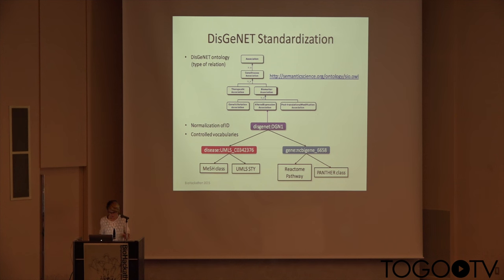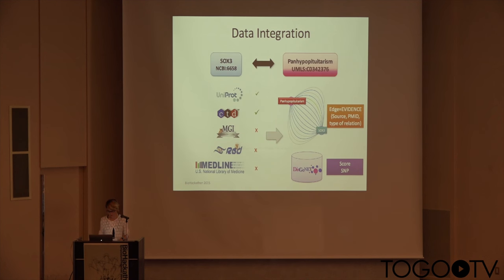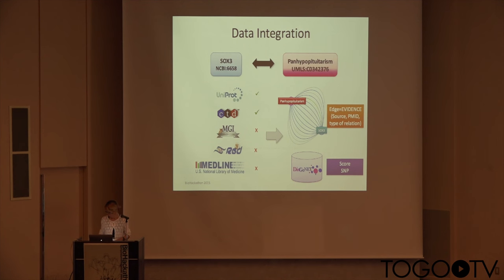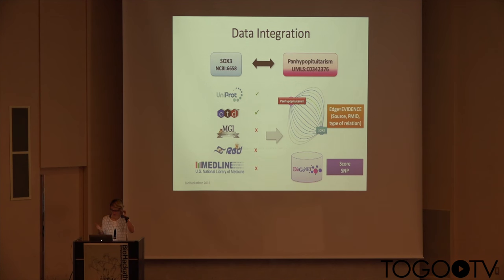We also identify our entities through normalization. Diseases are identified by UMLS concepts and genes by NCBI GeneID. We use controlled vocabularies as much as possible to annotate our entities. When you search gene-disease associations in Genet, we capture all the provenance of each statement. We also developed a score to help the user explore our data with a sense of the evidence supporting each association, and we track SNPs in each association.